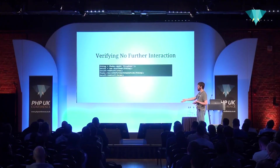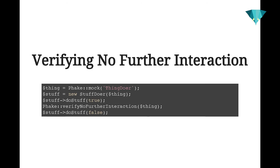Going further — if I want to verify that some interaction may have happened but no interaction happens after a certain point, I can do that as well. When I call doStuff with true, the ThingDoer method should be called — I know that. So I tell Fake: some interactions may have happened before now, but after this point no further interaction should happen, and verify that for me. Because my next line invokes doStuff such that the method won't be invoked again, this test should pass.